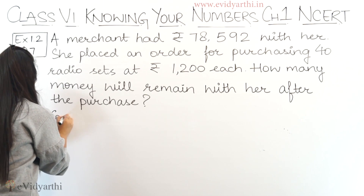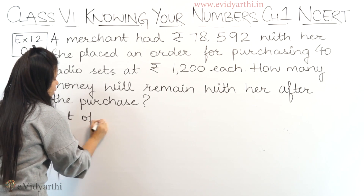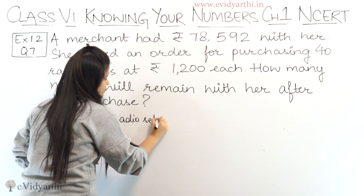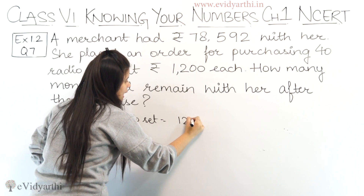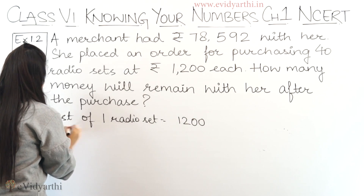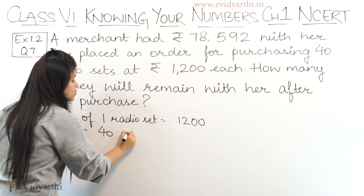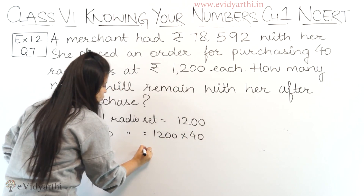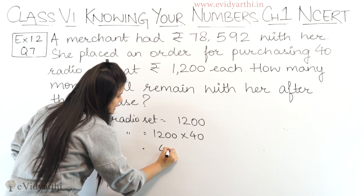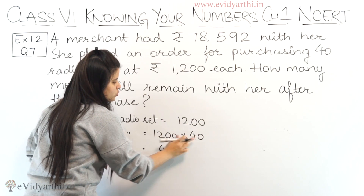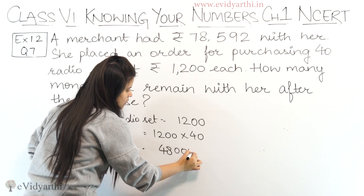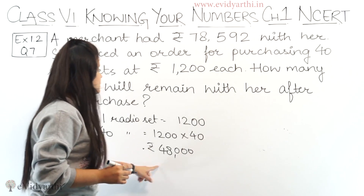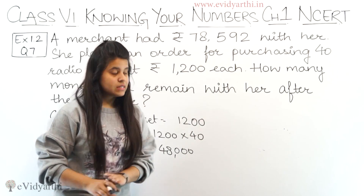Now cost of 1 radio set is Rs. 1200. So this means cost of 40 radio sets is Rs. 1200 into 40. Now 12 into 4 is 48, with 1, 2, 3 zeros. Means Rs. 48,000. Right? So the purchase cost her Rs. 48,000.